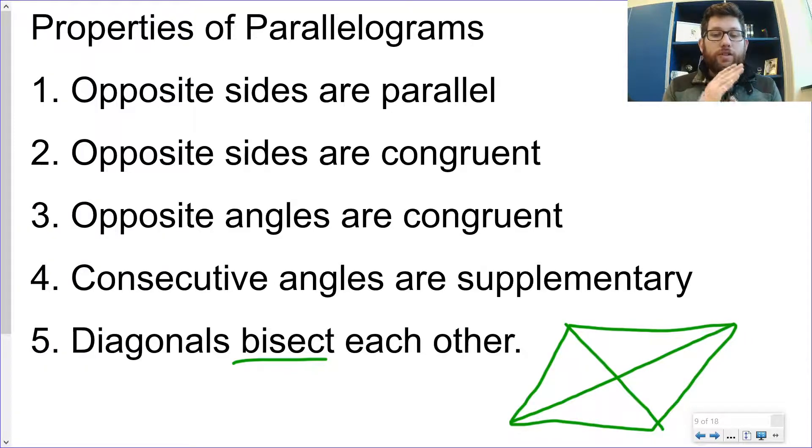Bisect means they don't just cross. They also cut each other in half. Remember, the one marking means they're the same size. So those two sections would be equal, and these two sections would be equal. So they cut each other in half. Diagonals bisect each other, cut each other in half. That's the new rule.